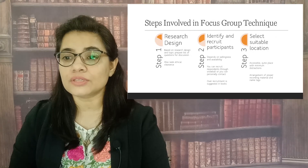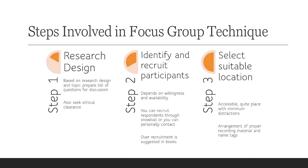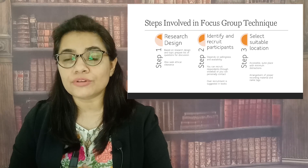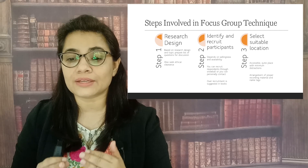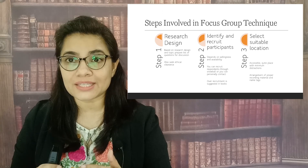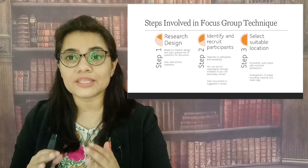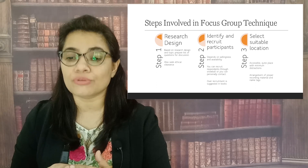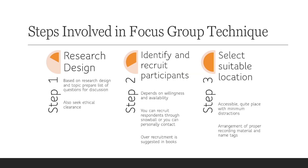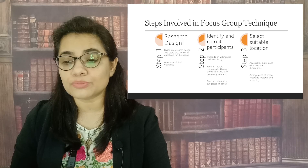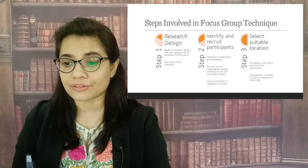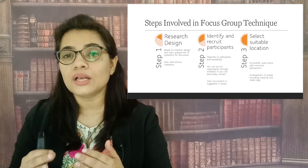Here are some of the techniques involved in focus groups. Step number one is research design. Based on research design and topic, you need to prepare a list of all the relevant questions to be asked from the participants. You also need to seek ethical clearance, as focus groups involve recording of voices of the participants, so you need to make sure that participant consent is in place. Step two, you need to identify and recruit the participants of your focus group. Depending on willingness and availability, recruit as many participants as you can. You can recruit respondents through snowball sampling, through some reference, or you can also directly contact participants who are relevant to your topic.